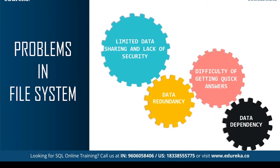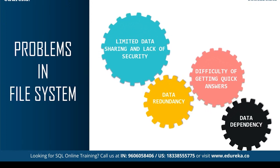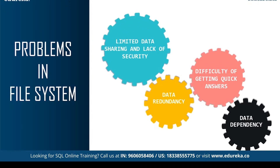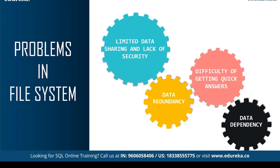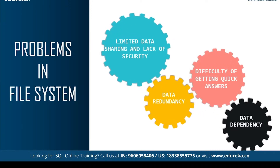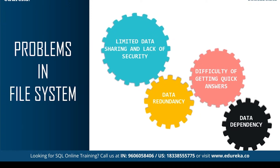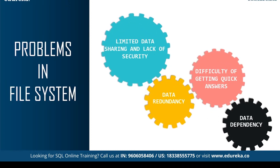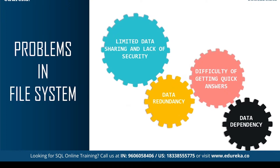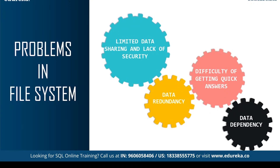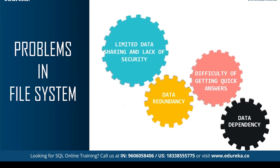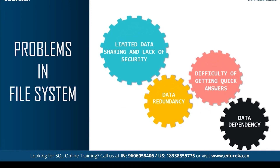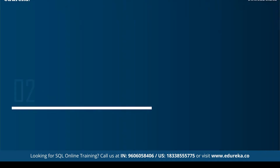The next problem is data dependence. In the file system, files and records are described by a specific physical format that is coded into the application by the programmers. If the format of any one record is changed, then we need to make sure that all the remaining records' format is updated. Any changes in storage structure or access methods could greatly affect the process and might result in failure of that particular application. These were a few problems of the file system, and the solution for this is SQL and database.